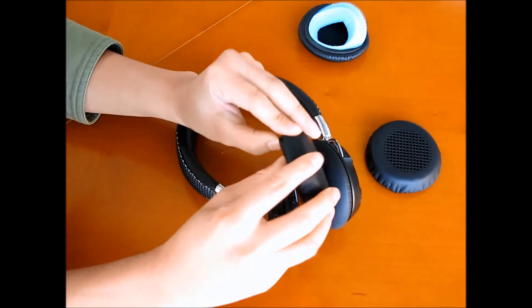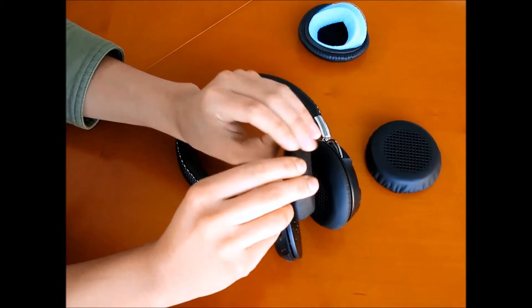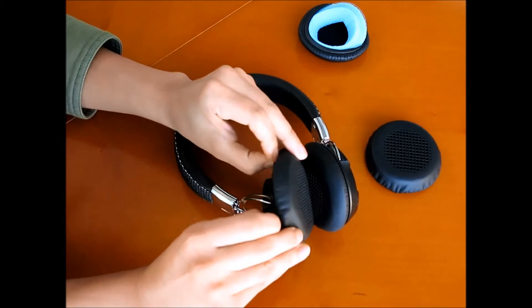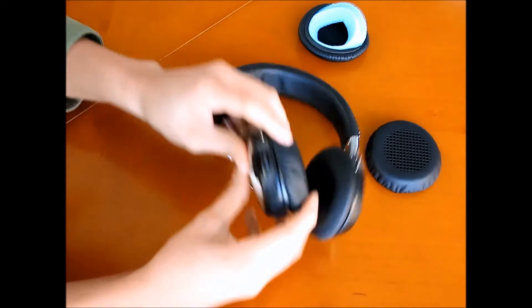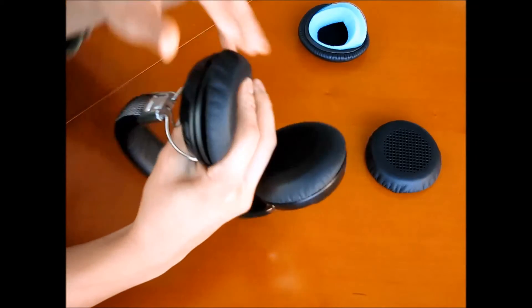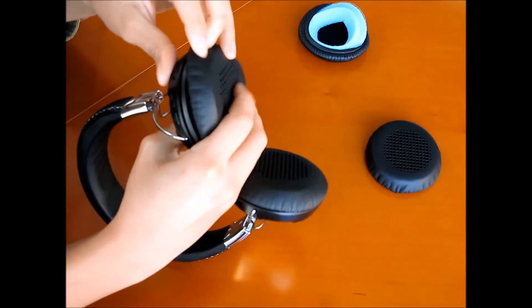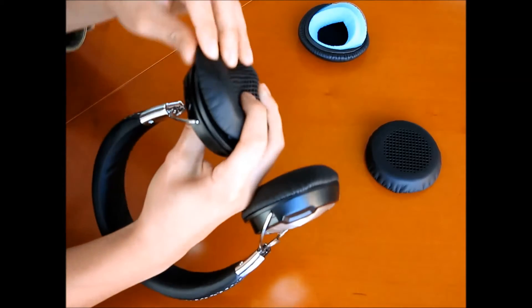After taking it off, you just need to simply put the new one back. It would be easy if you started with one side. Just gently press it, and then slowly tuck the rest back into the headphone.